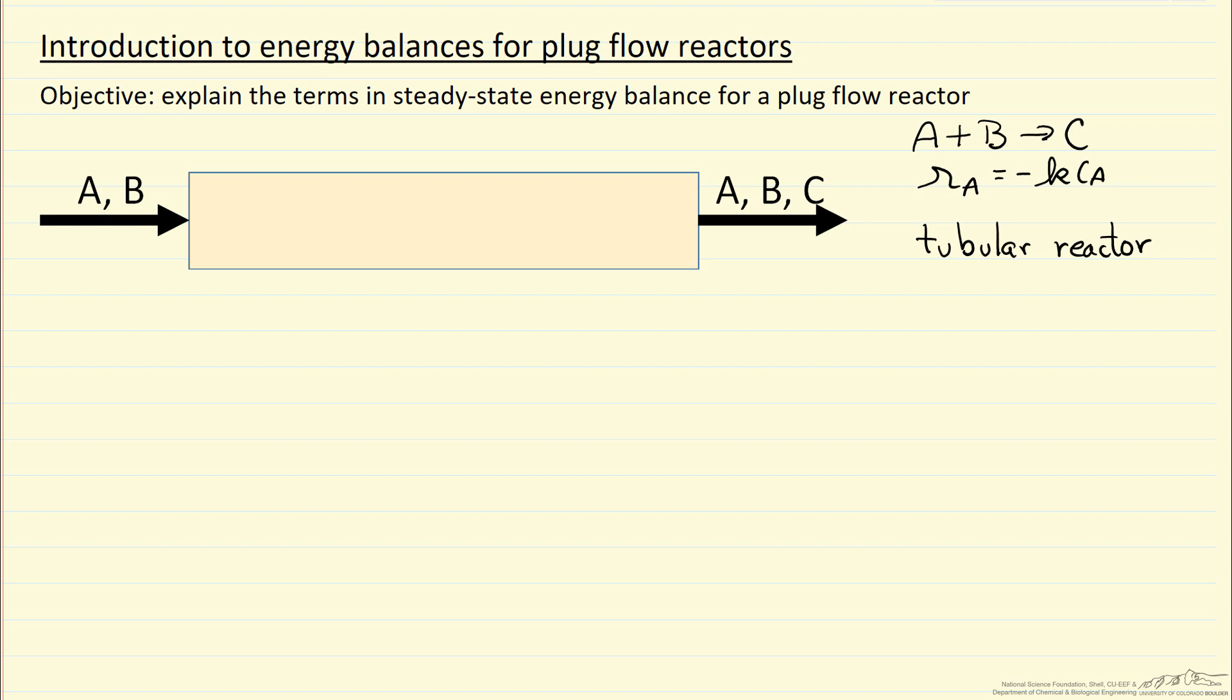Here we're going to explain the terms in energy balance for a plug flow reactor. I'm not going to derive the equations, but just explain them. We'll look at the case where we have reaction A plus B goes to C and the rate of reaction is first order in A.